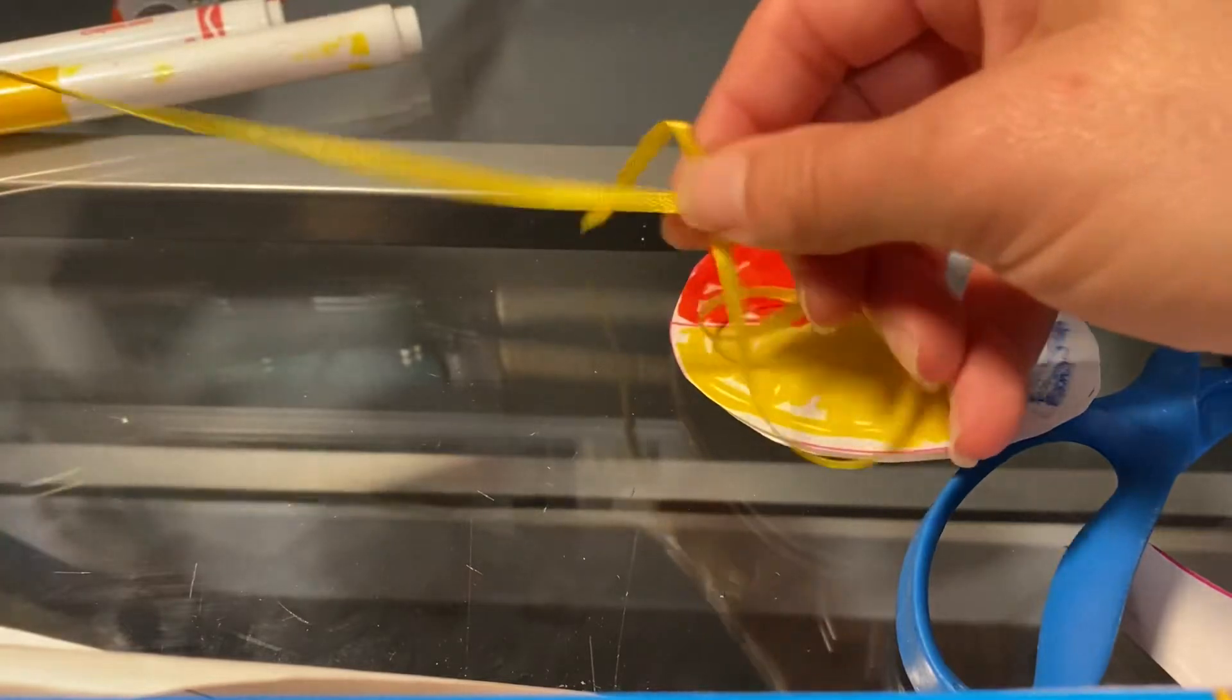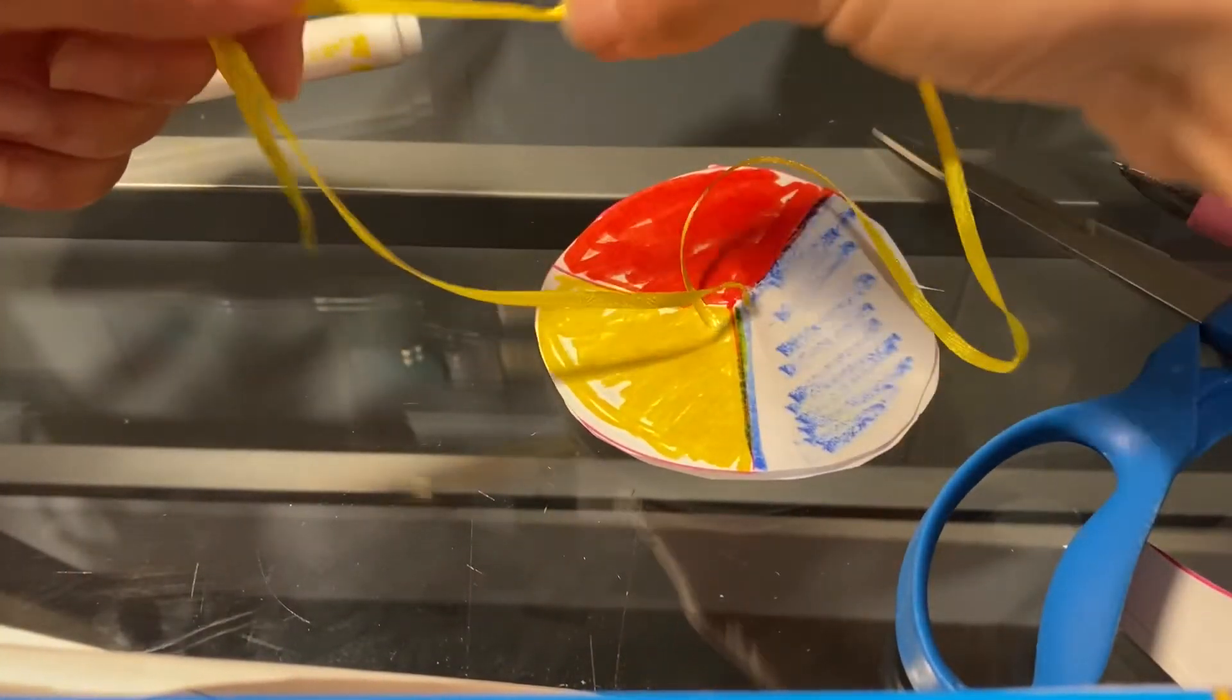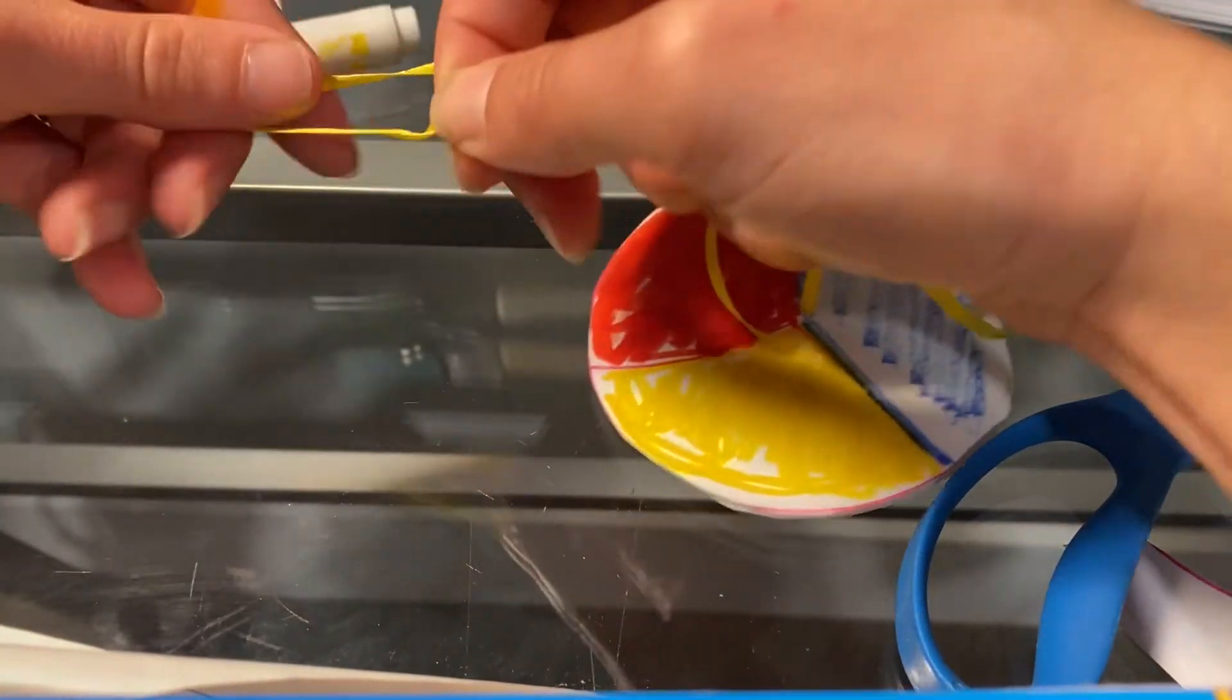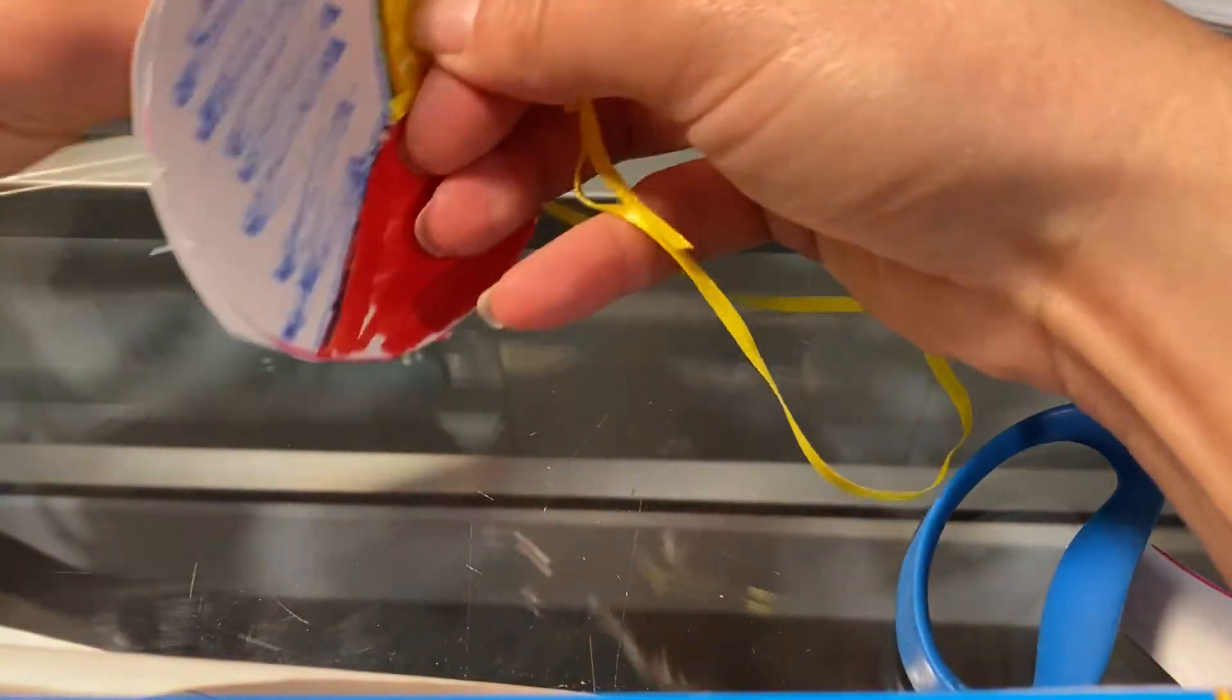And then you're just going to tie the two ends together here. So tie the two loose ends together. Kind of just tie a knot. All right. So then you have one continuous loop.